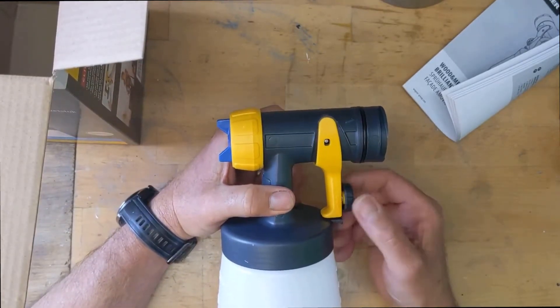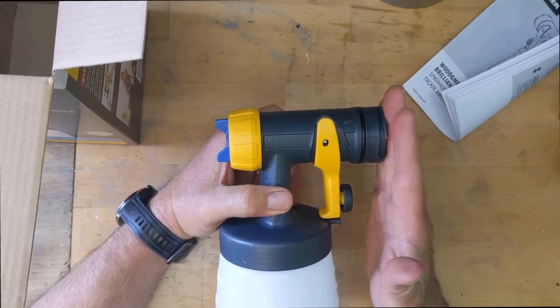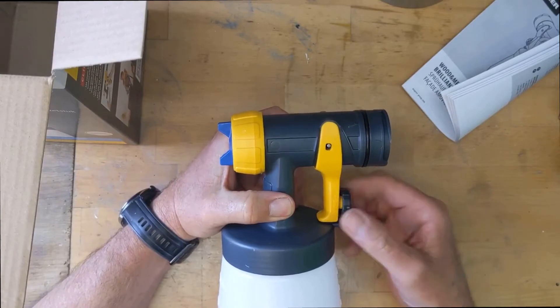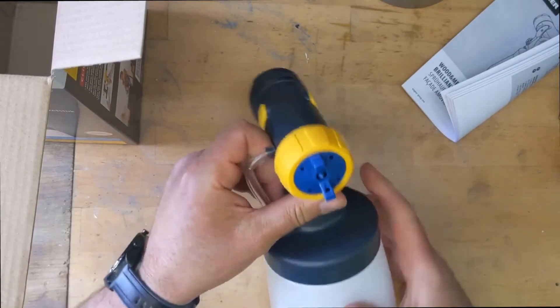This is the adjustment that goes on to the head of the unit that adjusts how much airflow you get. All that does is that restricts the trigger, so it's pretty straightforward.